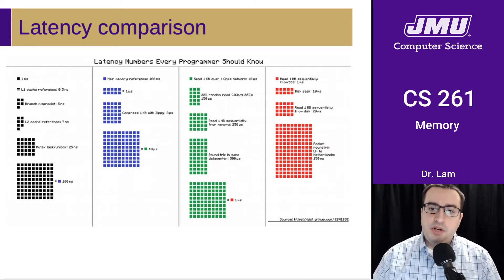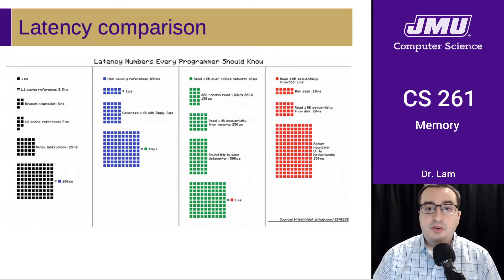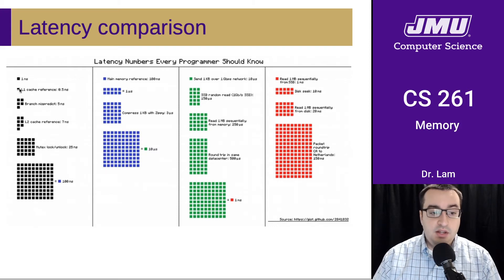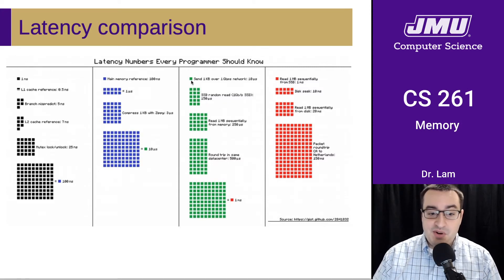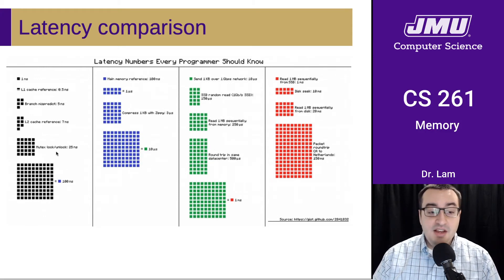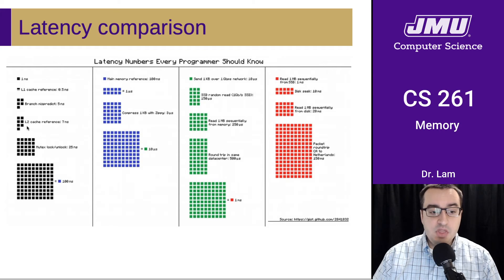It's really important to understand the differences we're talking about here — these things are often order-of-magnitude different in terms of latency. One way to visualize this is using little squares. Here we have one-nanosecond squares, with an L1 cache reference here and an L2 cache reference here. But the access to a solid state drive is way over here with the green dots — one green dot is the same as 100 blue dots, and one blue dot is the same as 100 black dots.